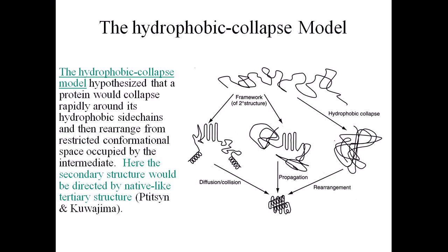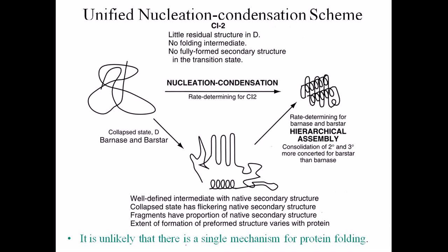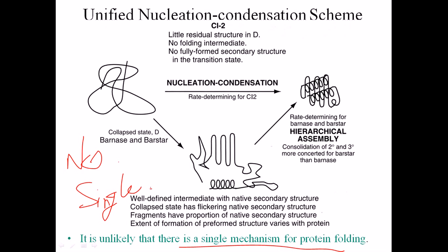The classic mantra for protein folding is that it is unlikely that there is a single mechanism for protein folding. No single mechanism can explain protein folding on its own. We have to incorporate all these different types of mechanisms to describe how a protein is properly folded, because this is still an undescribed process — research is ongoing with full force. The full mechanism of how folding is initiated is still unknown to us, so we must accommodate the framework model, the nucleation-propagation model, and the hydrophobic collapse model together to describe protein structure.